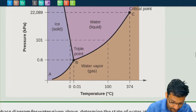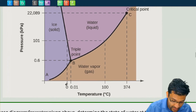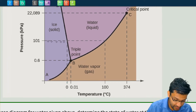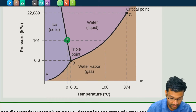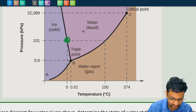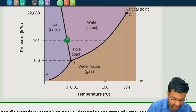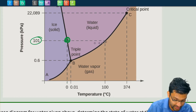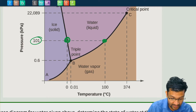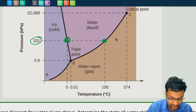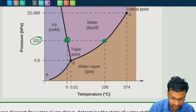We know at zero degrees Celsius and atmospheric pressure, that's where ice forms from water — so that's the phase boundary between solid and liquid. Similarly, 100 degrees Celsius and 101 kilopascals — that's atmospheric pressure — is the phase boundary between liquid water and water vapor or gas.